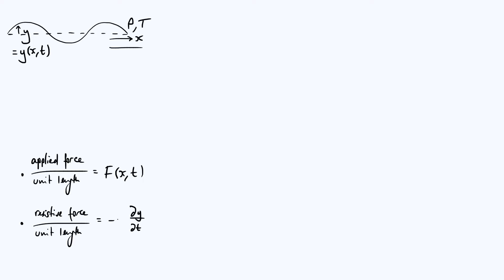The transverse velocity would be the partial derivative of y with respect to time. We're going to put a minus sign here because that's a resistive force, so it's always opposing the motion of the string, and we need some constant of proportionality there, which I'm going to call b. So we have a resistive force per unit length of minus b dy by dt, which itself is a function of x and t, because y is a function of x and t as well.